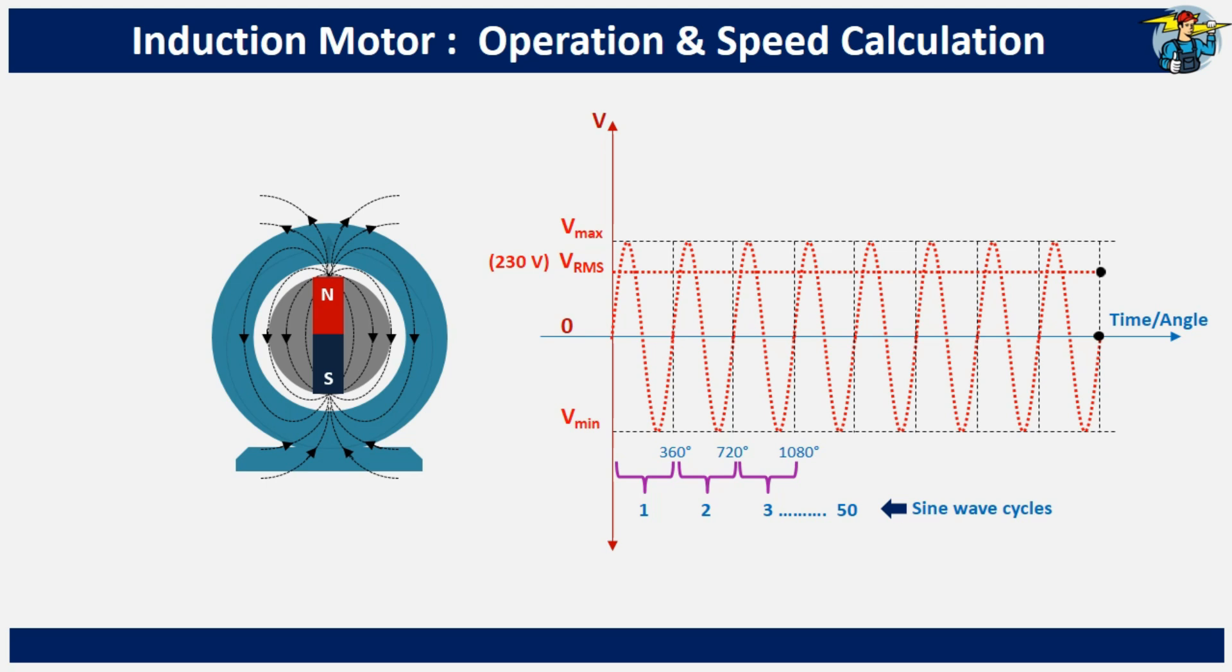In North America, including the USA, the supply RMS voltage is 120 volts and the frequency is 60 Hz, whereas in Europe and most other countries, it is 230 volts at 50 Hz.